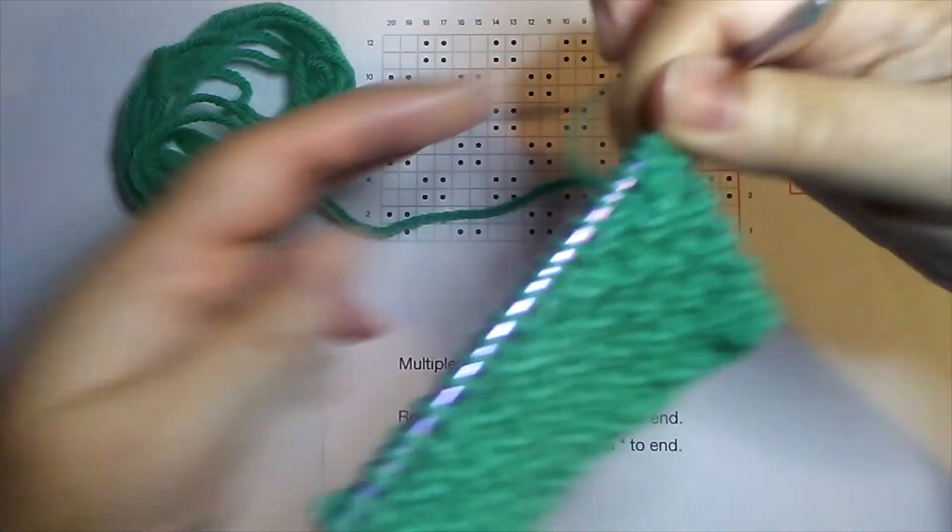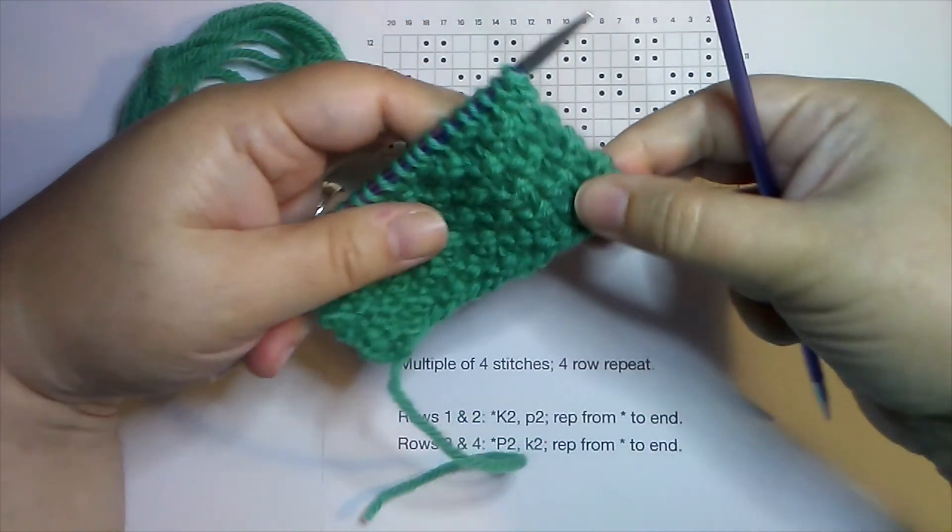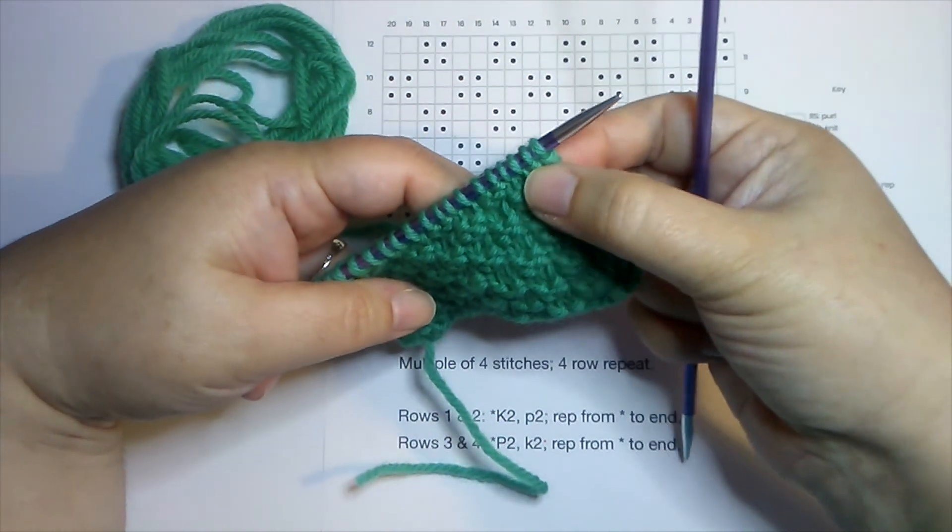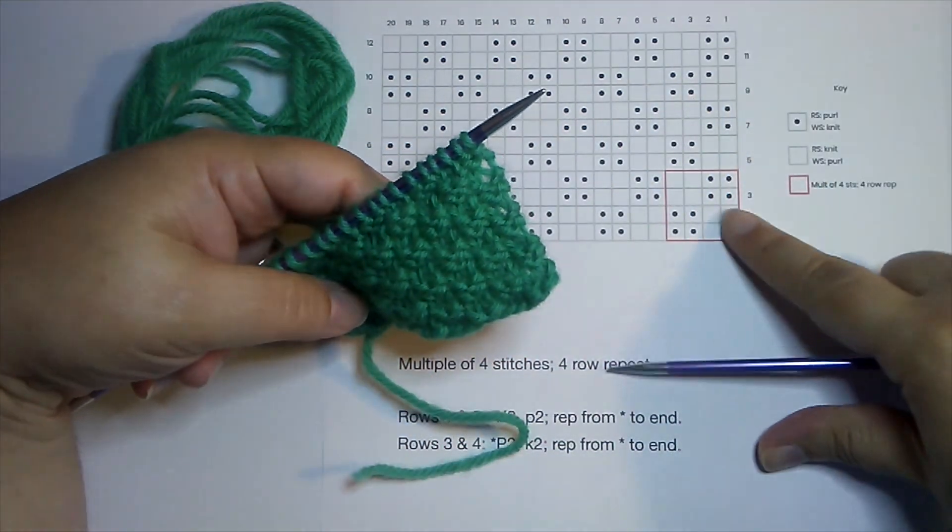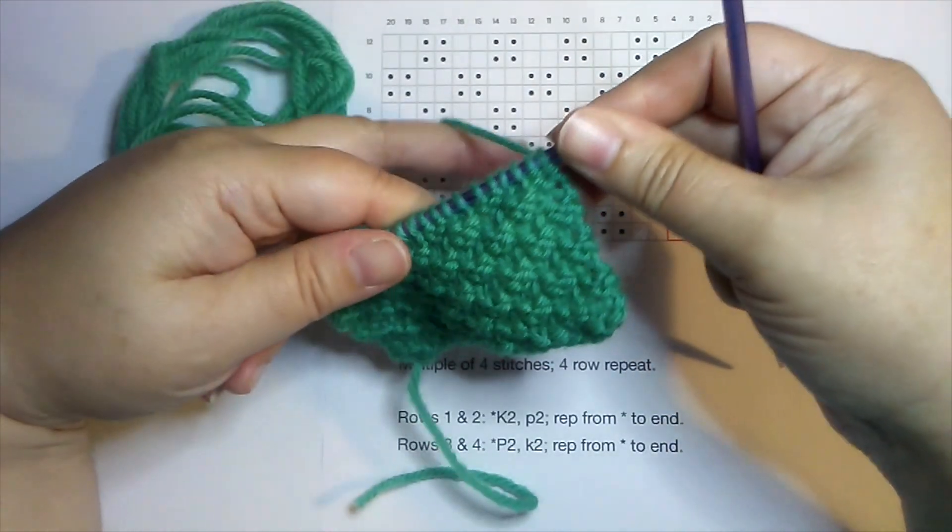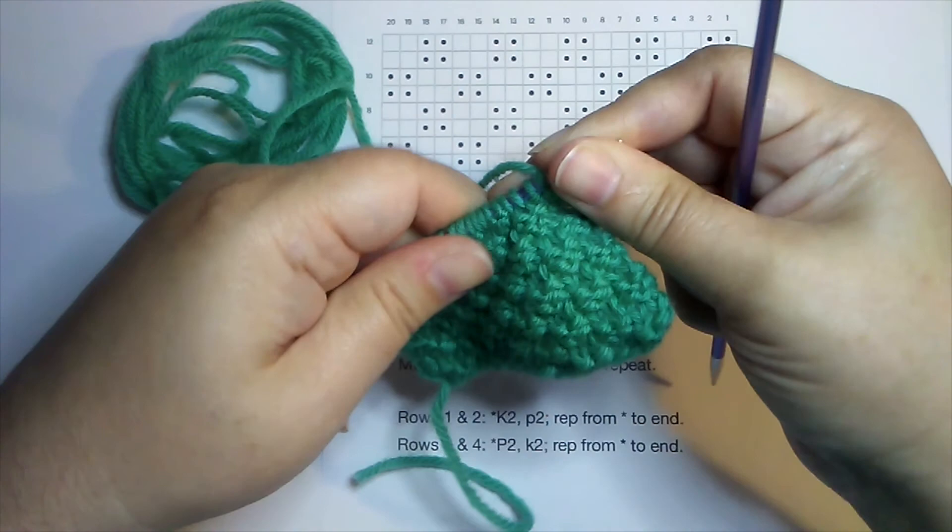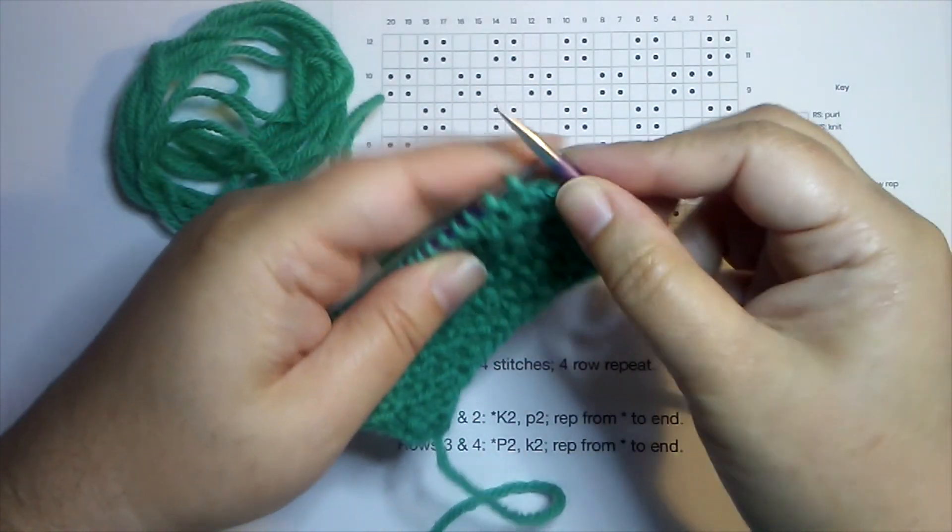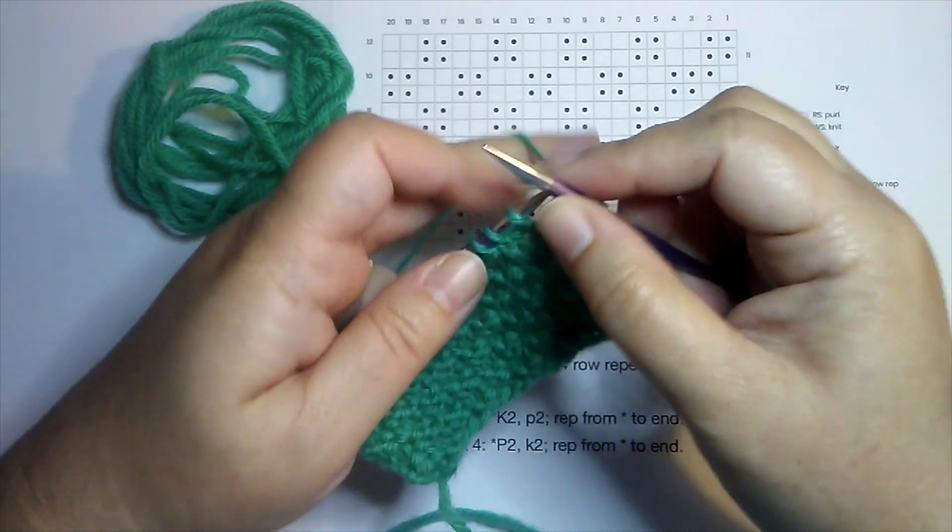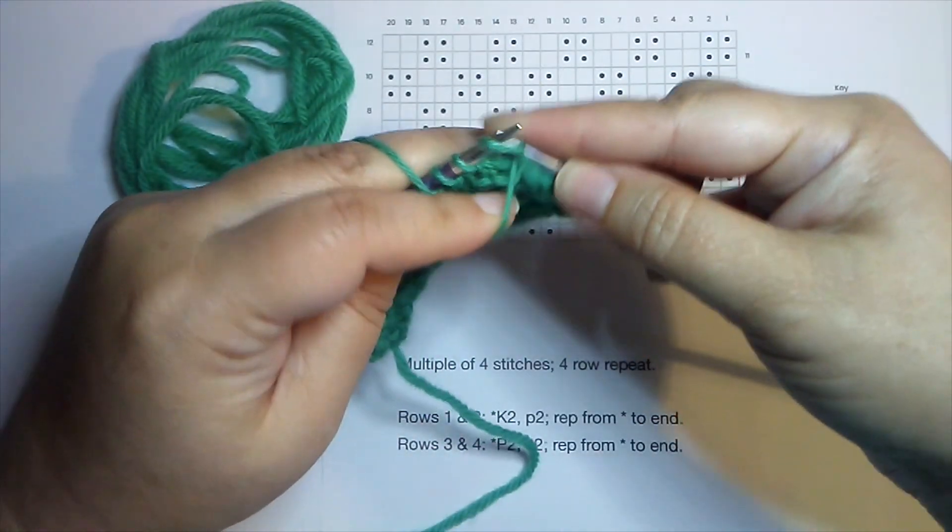All right, so I'm ready to work another row and I'm on the right side of my work. And I can see two purl stitches right there, so I know the next set of rows I'm working, I'm back to my knit two, purl two. So I can break up this pattern and create that box stitch.